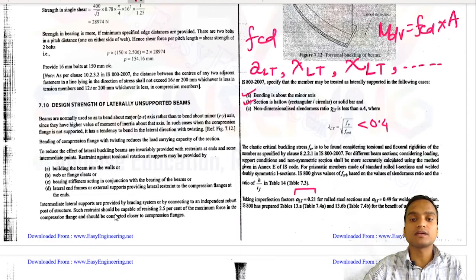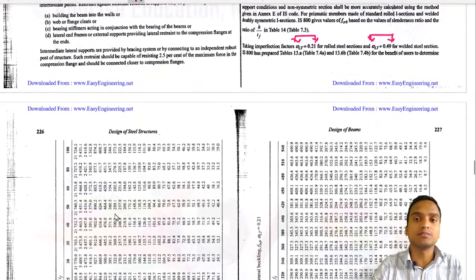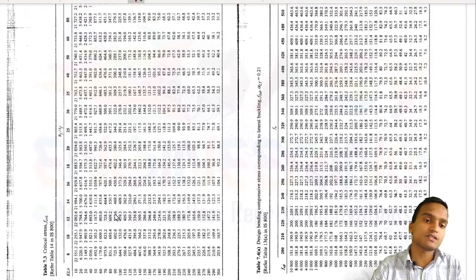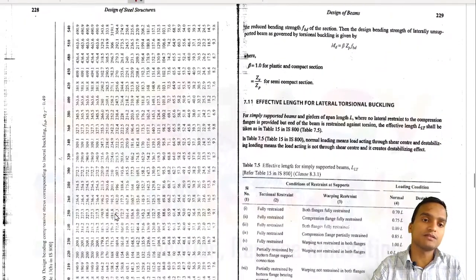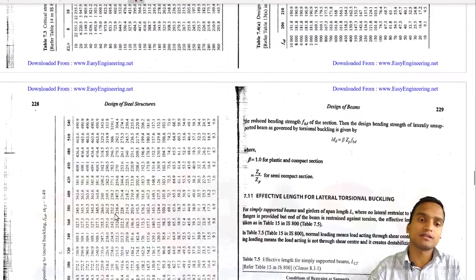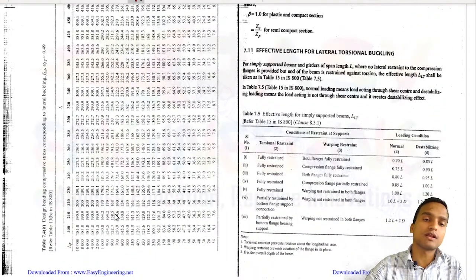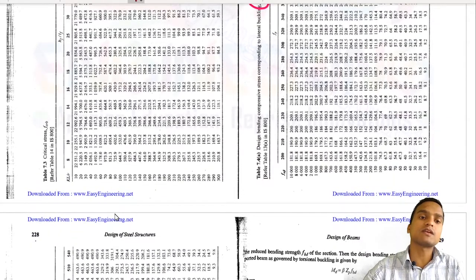The tabular approach is a little easier. Bending is about the minor axis, sections are hollow, and the non-dimensional λ_LT should be less than 0.4, equal to √(f_y / f_crb). We use Table 13 and Table 14 from the IS code. The imperfection factor α_LT is 0.21 for rolled steel sections and 0.49 for welded steel sections. Tables 13a and 13b are used to calculate critical stresses f_crb and f_bd.